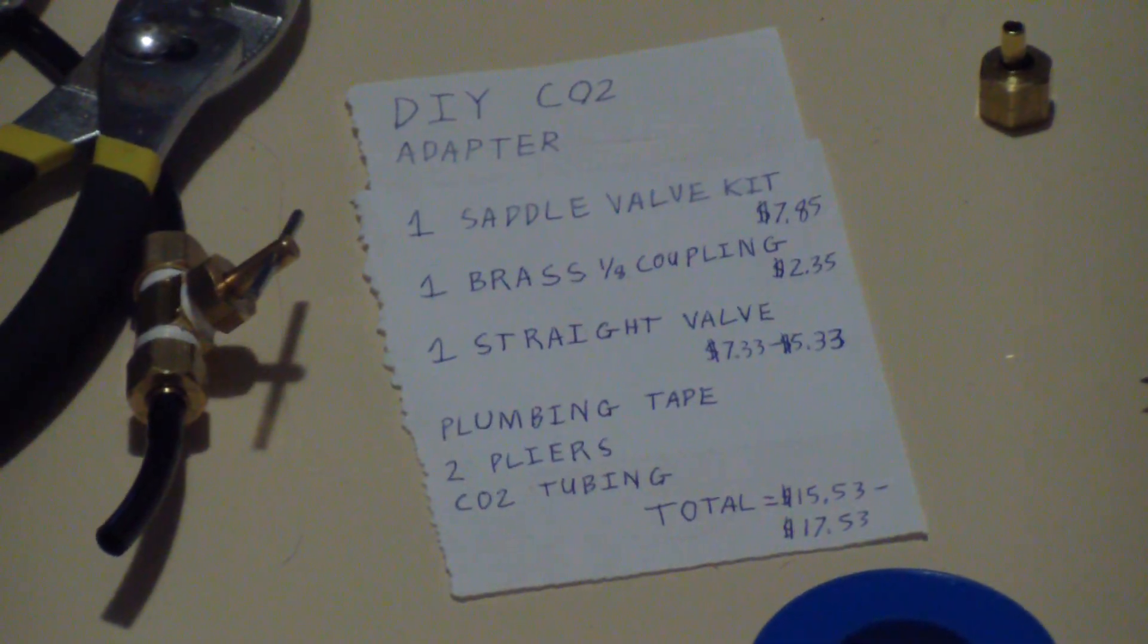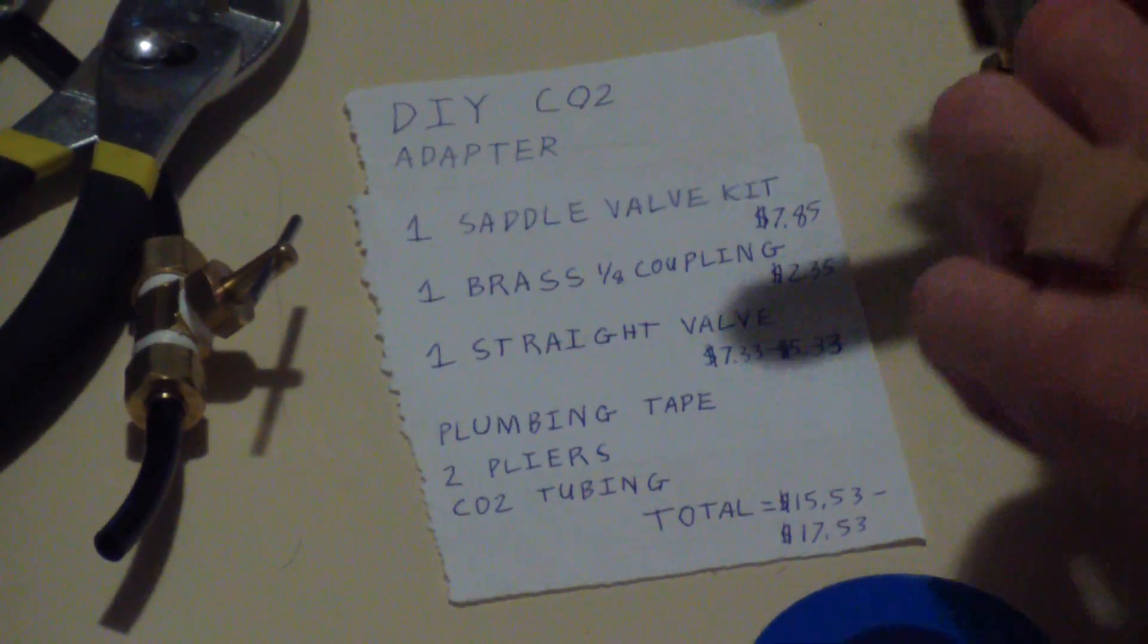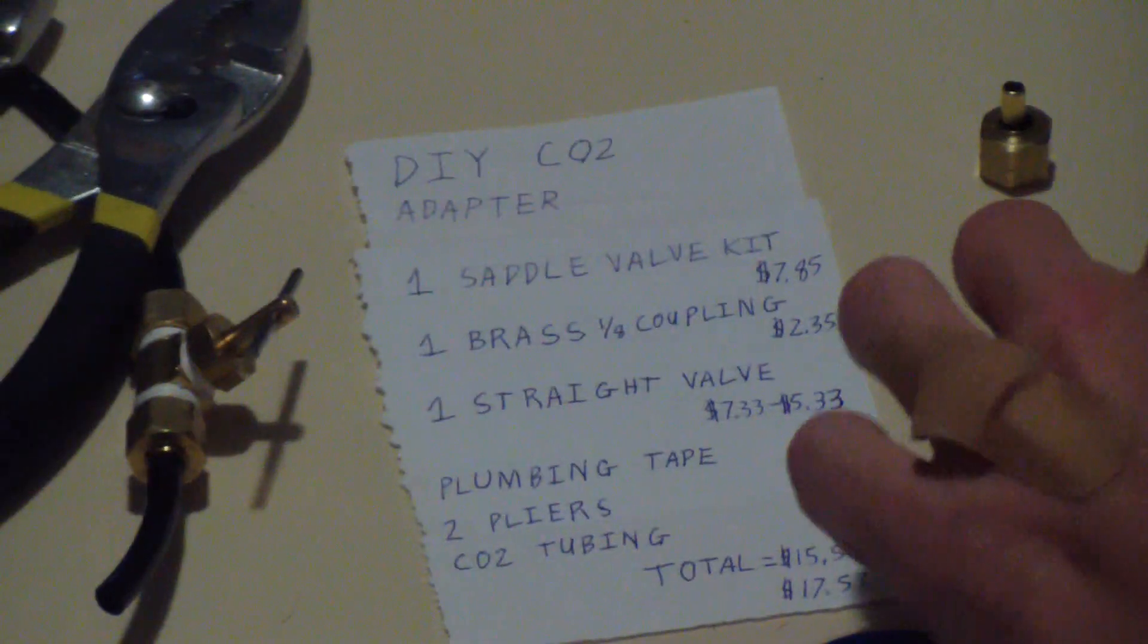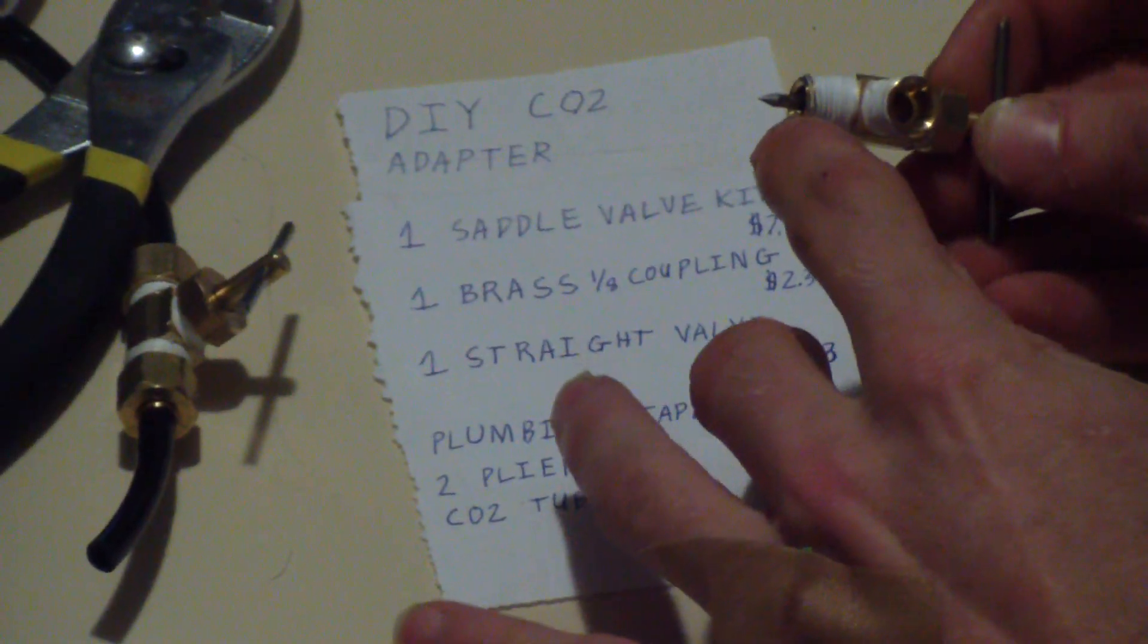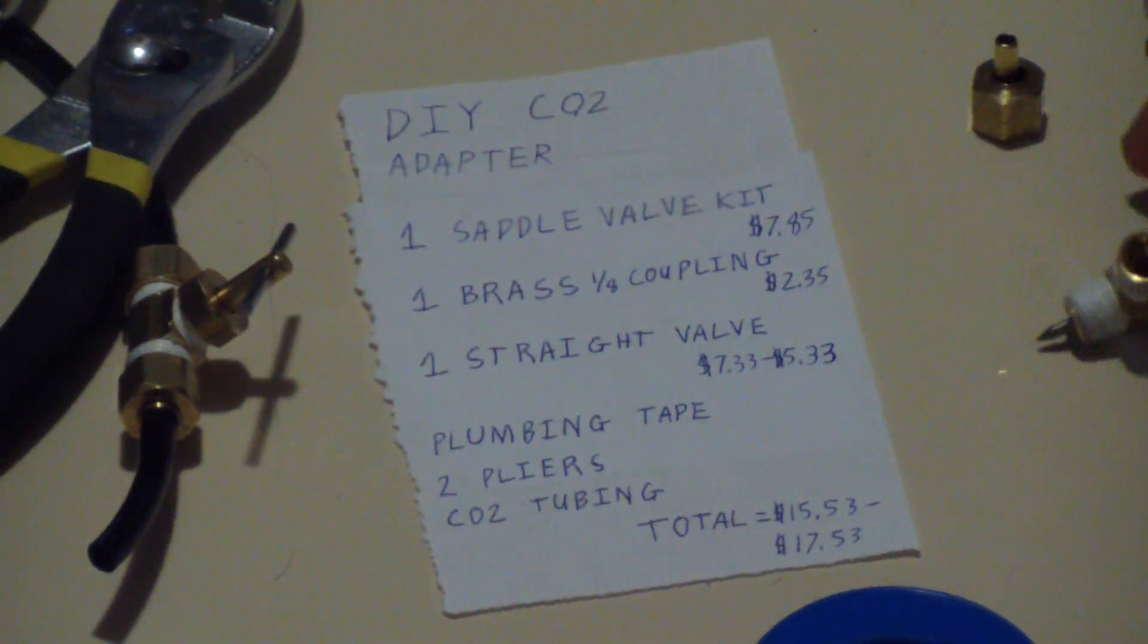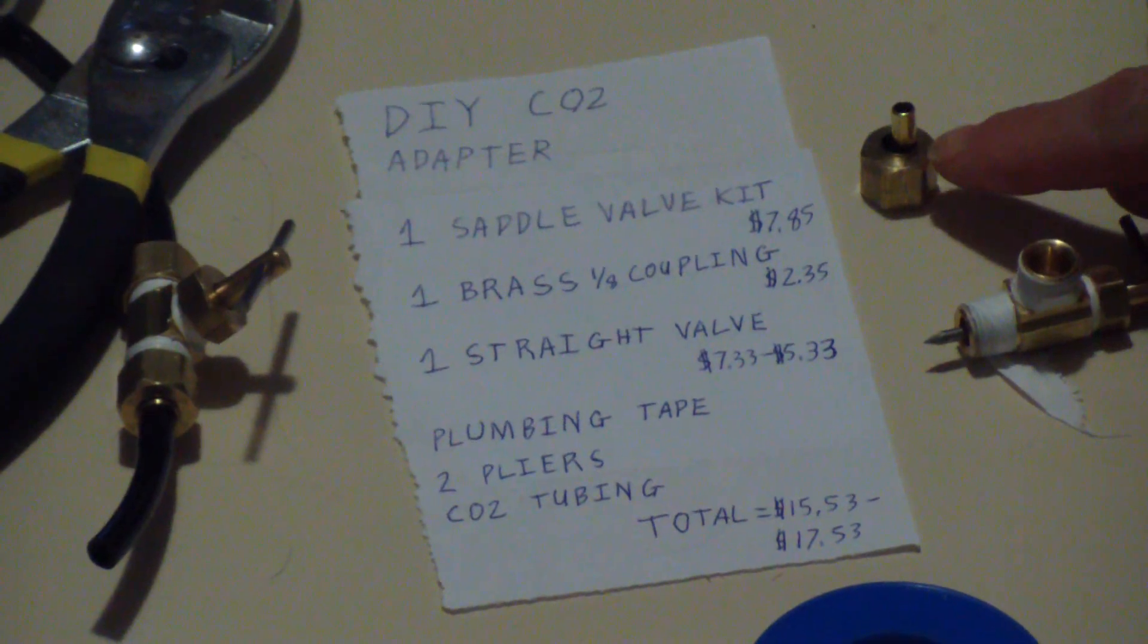What you'll need for this project is a saddle valve kit, which will include your saddle, the saddle valve which has the piece that will puncture the cylinder, and it will also come with one of these.